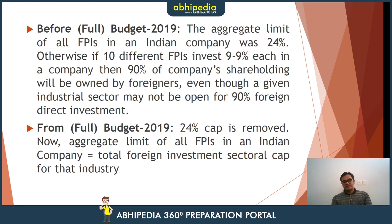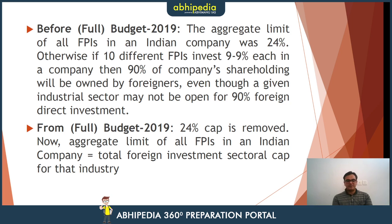After the full budget of 2019, this 24% cap was removed. Now the aggregate limit of all FPIs in an Indian company is equal to the total foreign investment sectoral cap for that industry. So if an FPI invests more than 10%, it is essentially considered as FDI. The individual investor distinction doesn't matter anymore — it is all treated at the total foreign investment level.